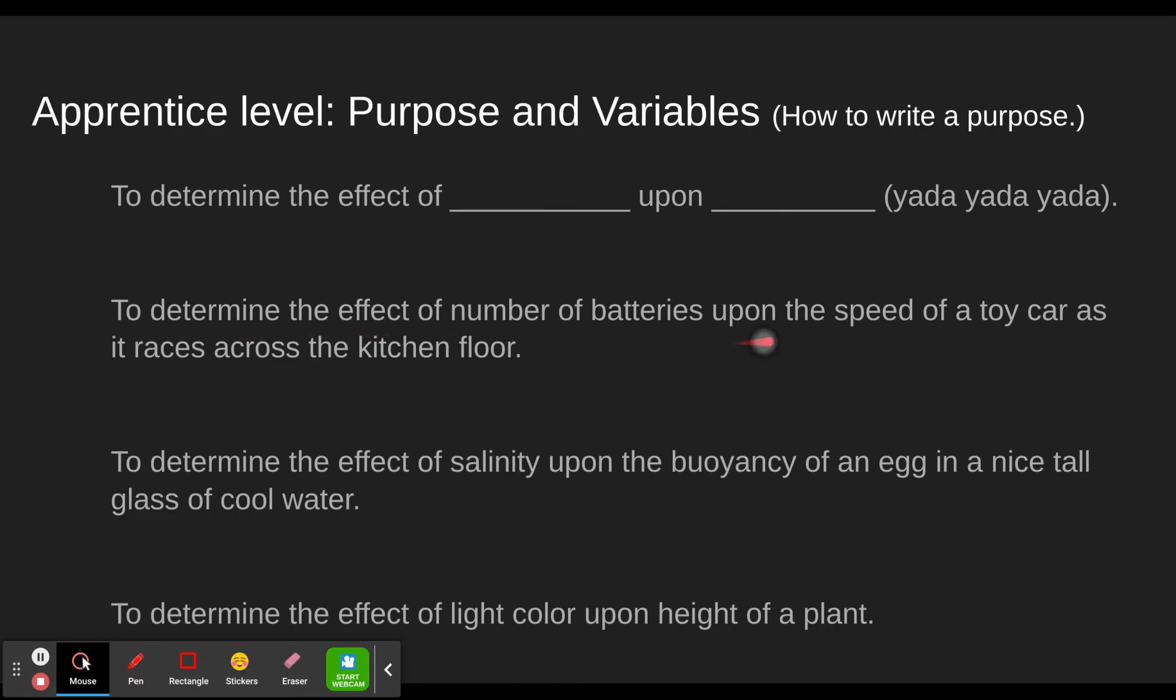So here's some examples. To determine the effect of the number of batteries upon the speed of a toy car as it races across the kitchen floor. That means number of batteries is your independent variable, and speed of the toy car is your dependent variable. You're changing this to see how it affects that. Next experiment, here's the purpose. To determine the effect of salinity upon the buoyancy of an egg in a nice tall glass of cool water. Notice, cool water, that's a constant variable. It's not one of the ones we're talking about here. The apprentice level gives you a purpose like this and asks what's the independent variable, what's the dependent variable. So to determine the effect of salinity, that means you're going to change the salinity. That means it's the independent variable. Upon the buoyancy of an egg.